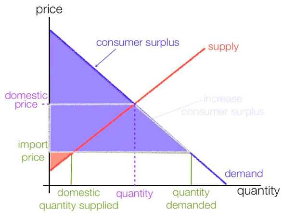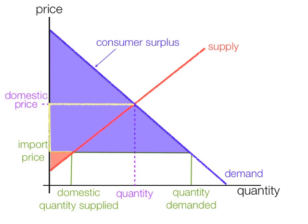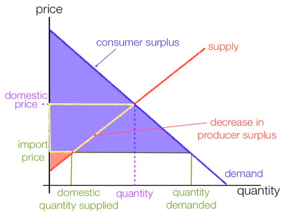The box outlined by the silver trapezoid is the increase in consumer surplus. The area outlined by the yellow triangle is lost producer surplus — that area there is the decrease in producer surplus.